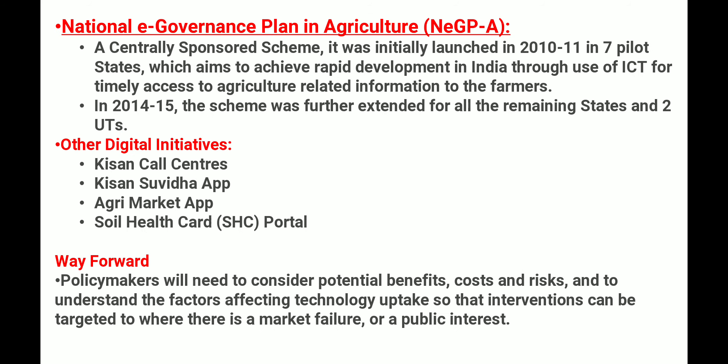National e-Governance Plan in Agriculture जो कि एक centrally sponsored scheme है, जिसको launch किया गया था 2010 में in seven pilot states, जिसका aim है achieve करना rapid development in India through use of ICT for timely access to agriculture-related information to farmers। 2014-15 के बीच में scheme को further extend किया गया था for all the remaining states and UTs। दूसरे digital initiatives हैं: Kisan Call Center, Kisan Suvidha app, Agri Market app, Soil Health Card portal।